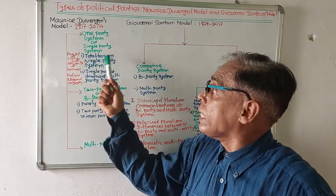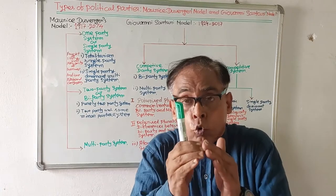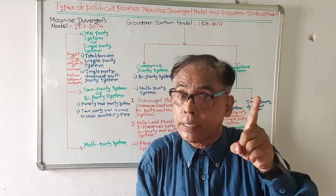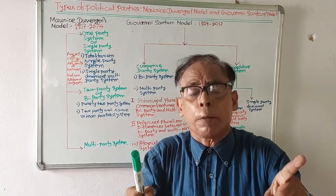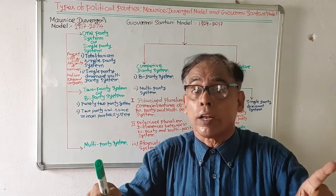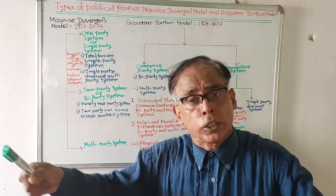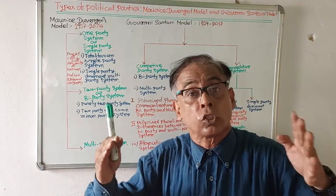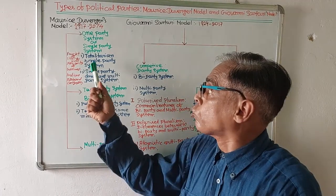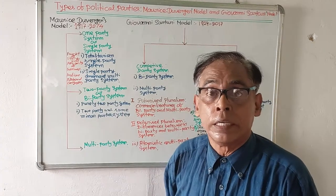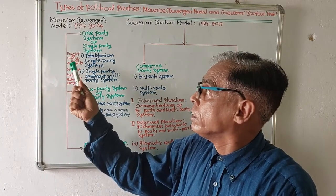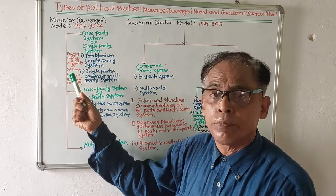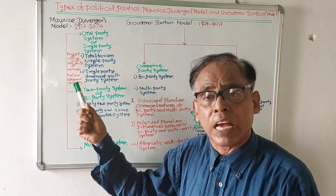In the totalitarian single party system, there will be only one political party in a country and the party is very powerful. It does not tolerate the existence of opposition parties; if there will be any opposition party, it suppresses them with a strong hand. Examples include the Fascist Party of Italy during the time of Mussolini, and the Nazi Party of Germany during the time of Hitler.